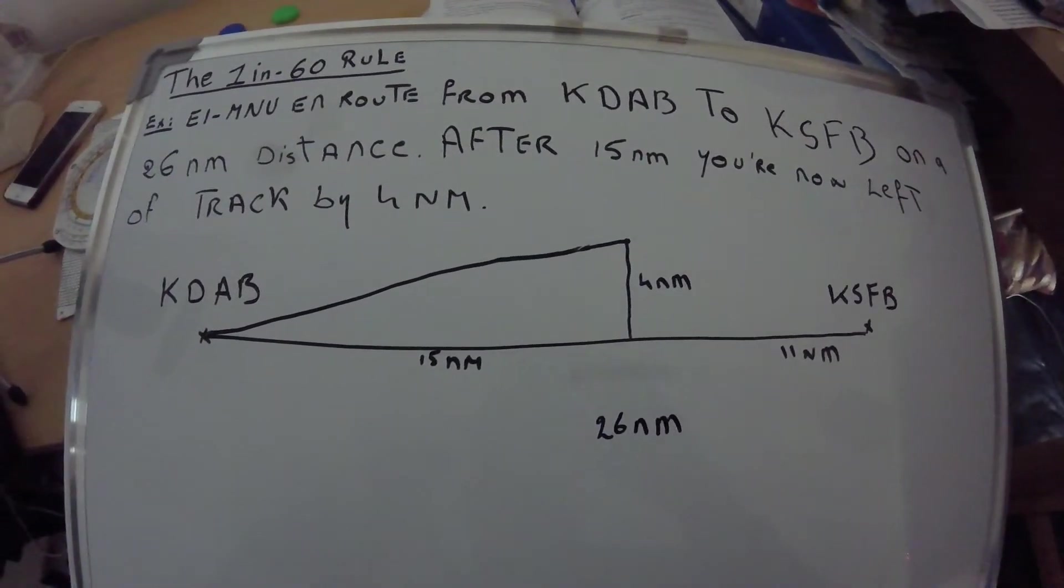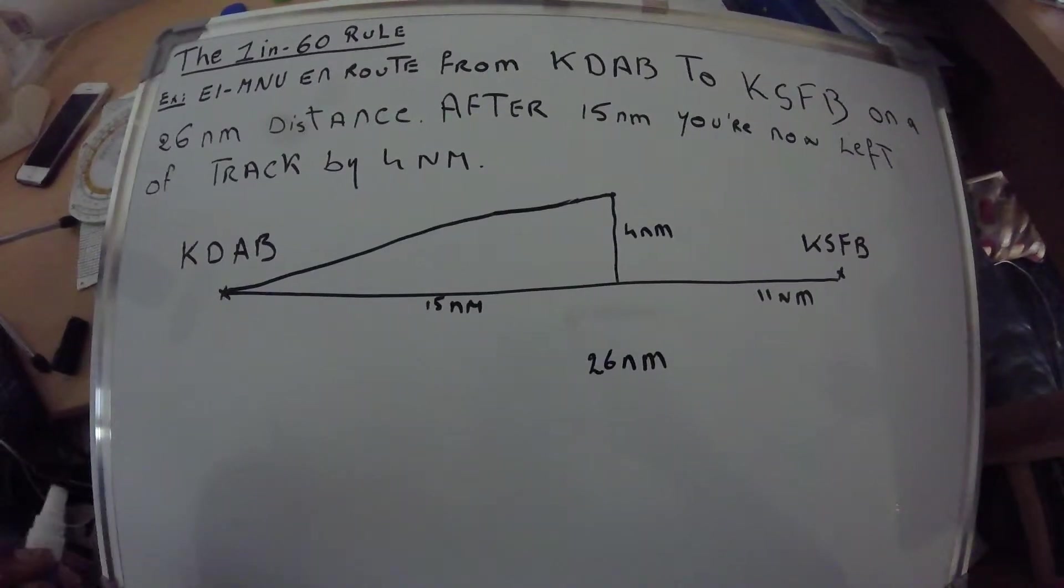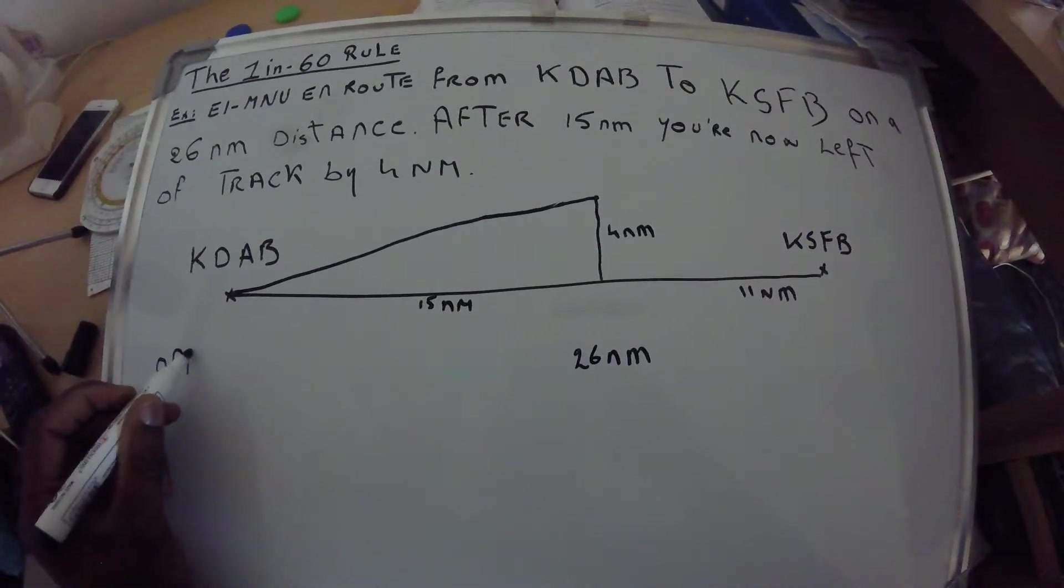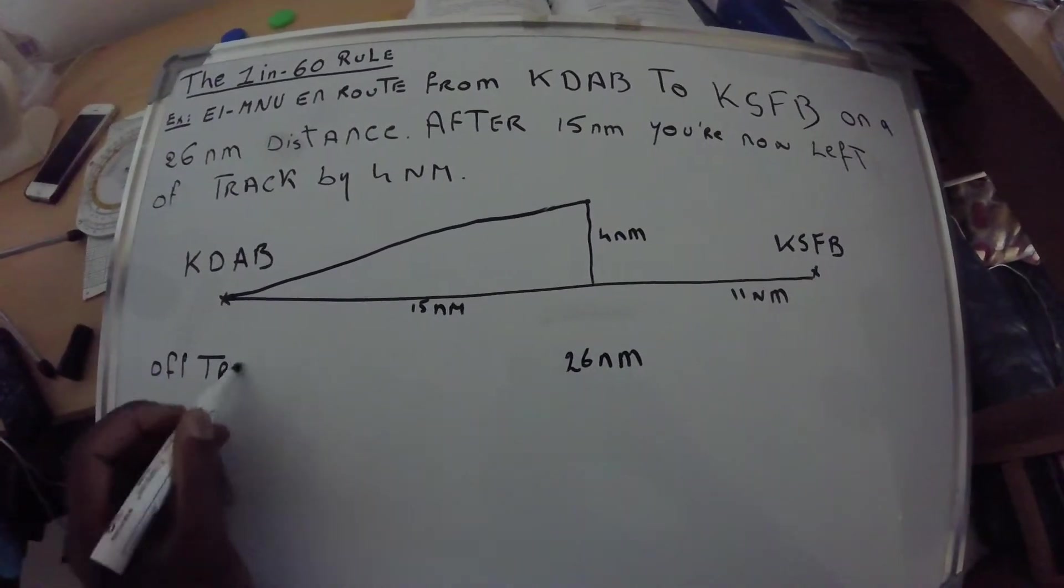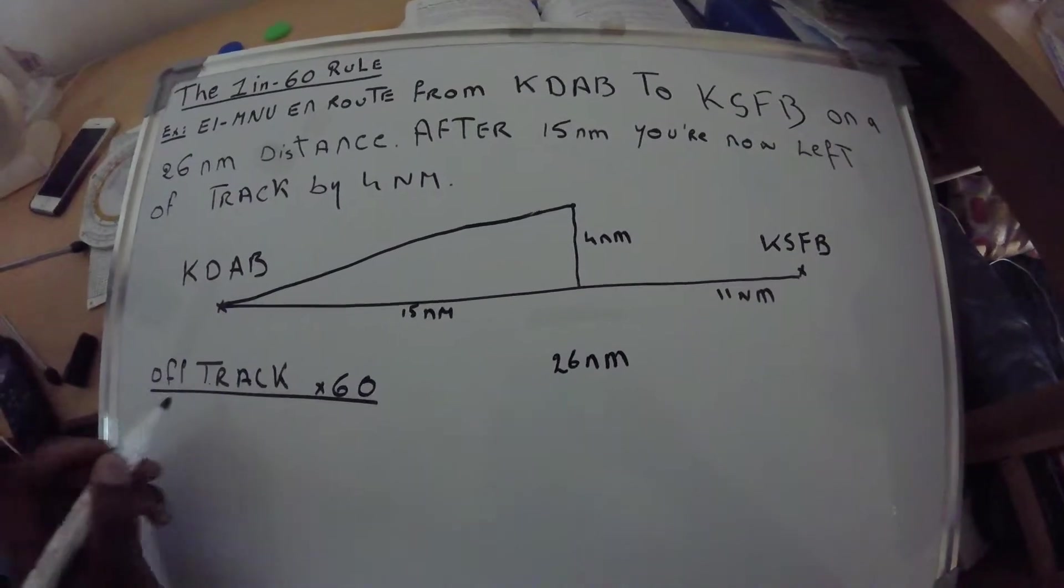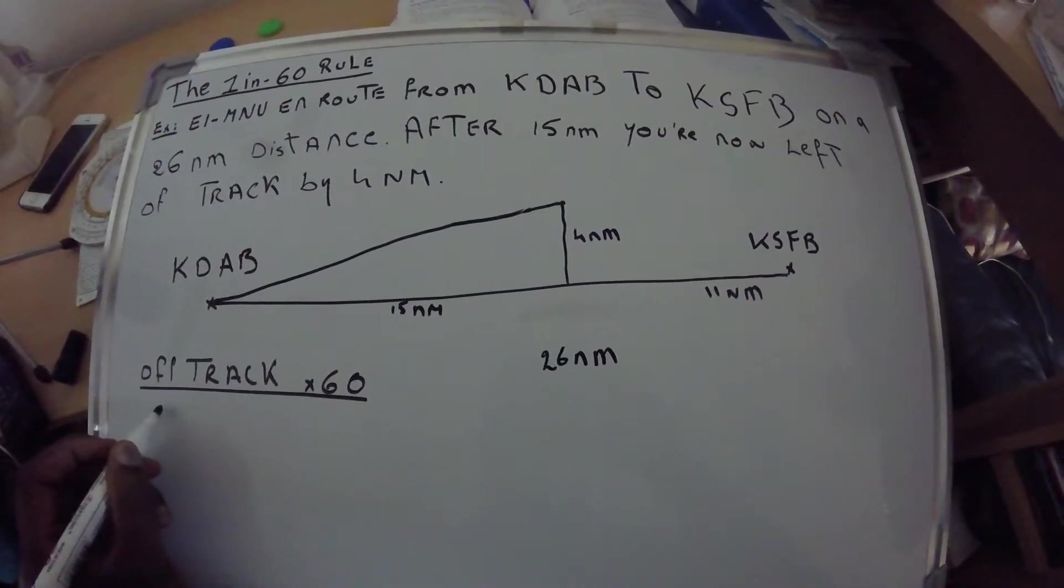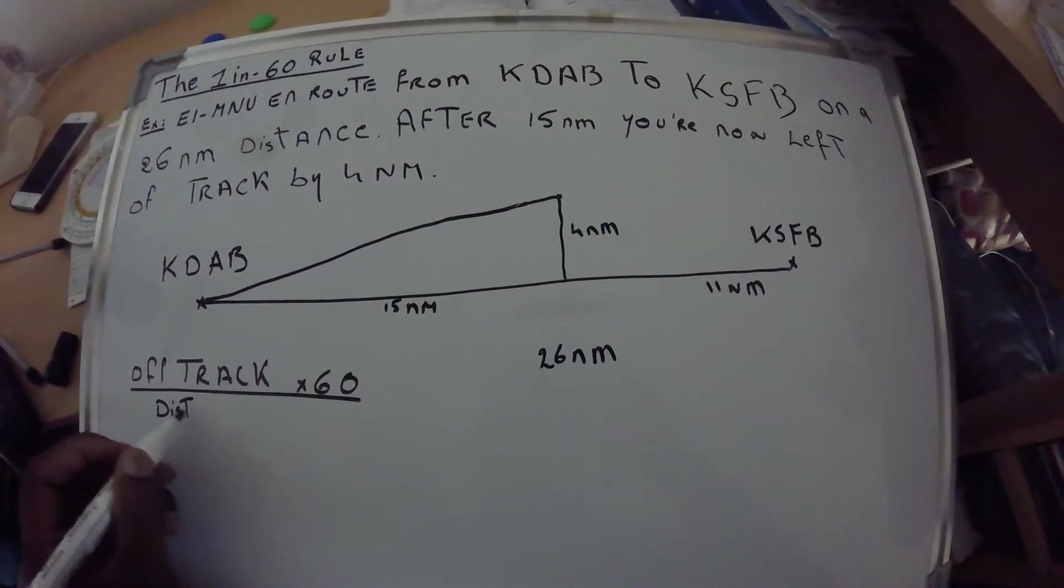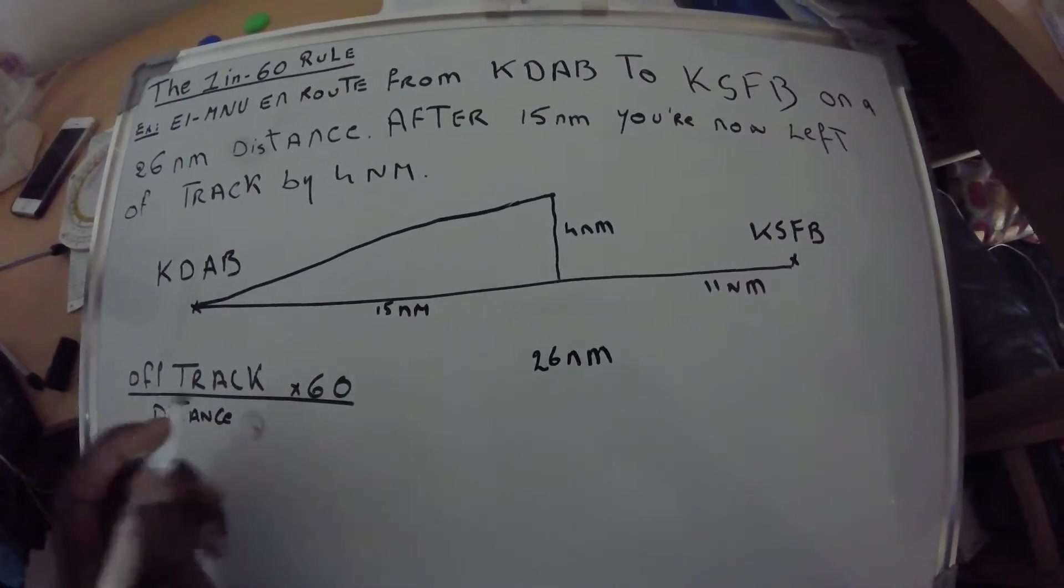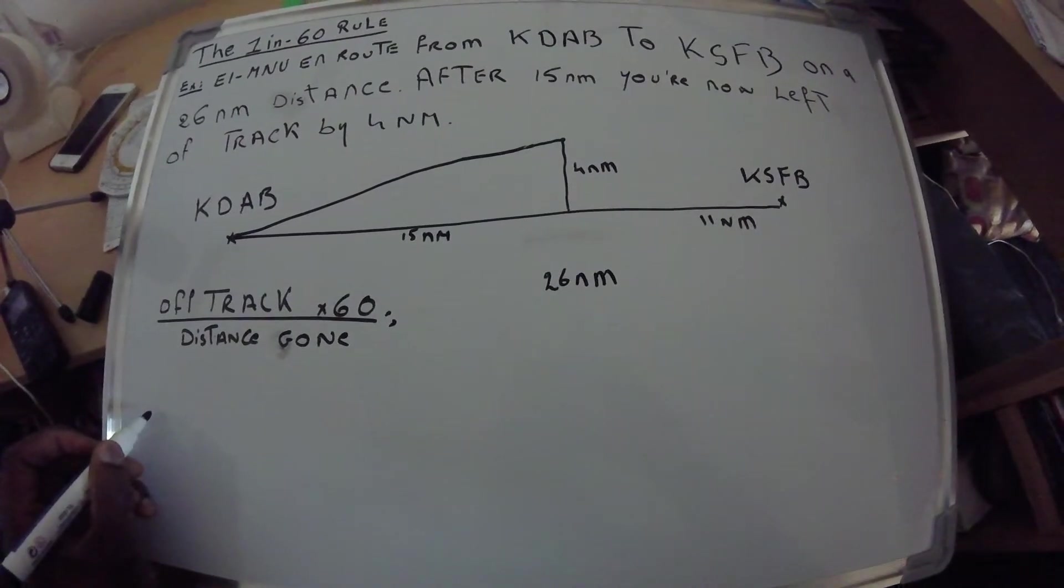Very quickly, for the rules we already know from the 1-in-60 rule: off track multiplied by 60 divided by the distance already covered. Sometimes they call this distance gone—this is how I was taught. Then we have again off track...